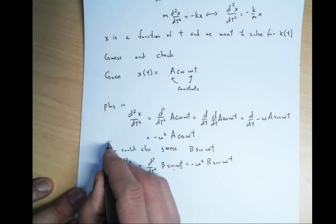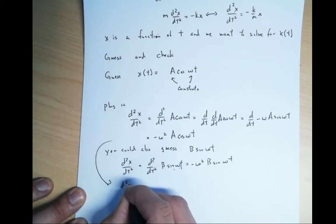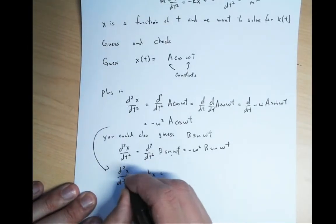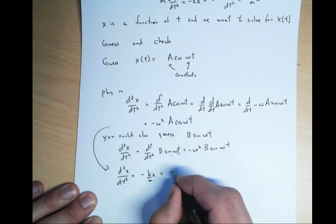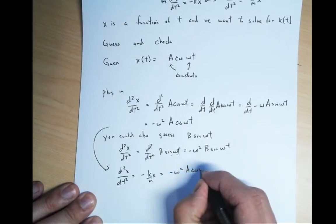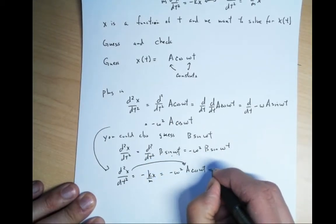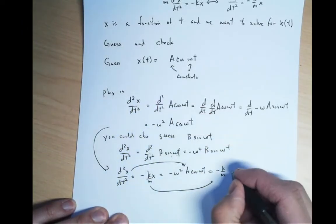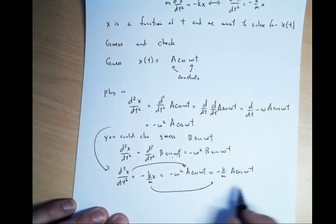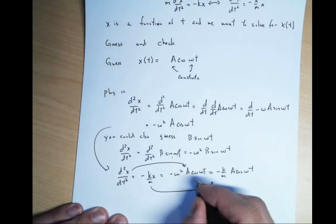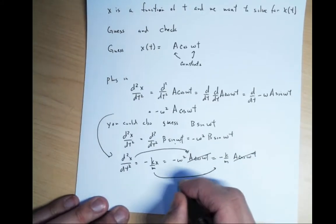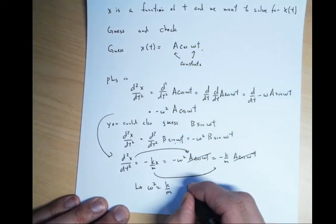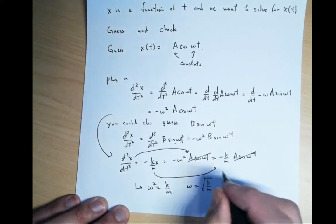Plugging the first guess into d squared x dt squared equals minus k over m times x: the left side is minus omega squared A cosine omega t, and the right side is minus k over m times A cosine omega t. The term A cosine omega t appears on both sides and cancels, giving the condition omega squared equals k over m.